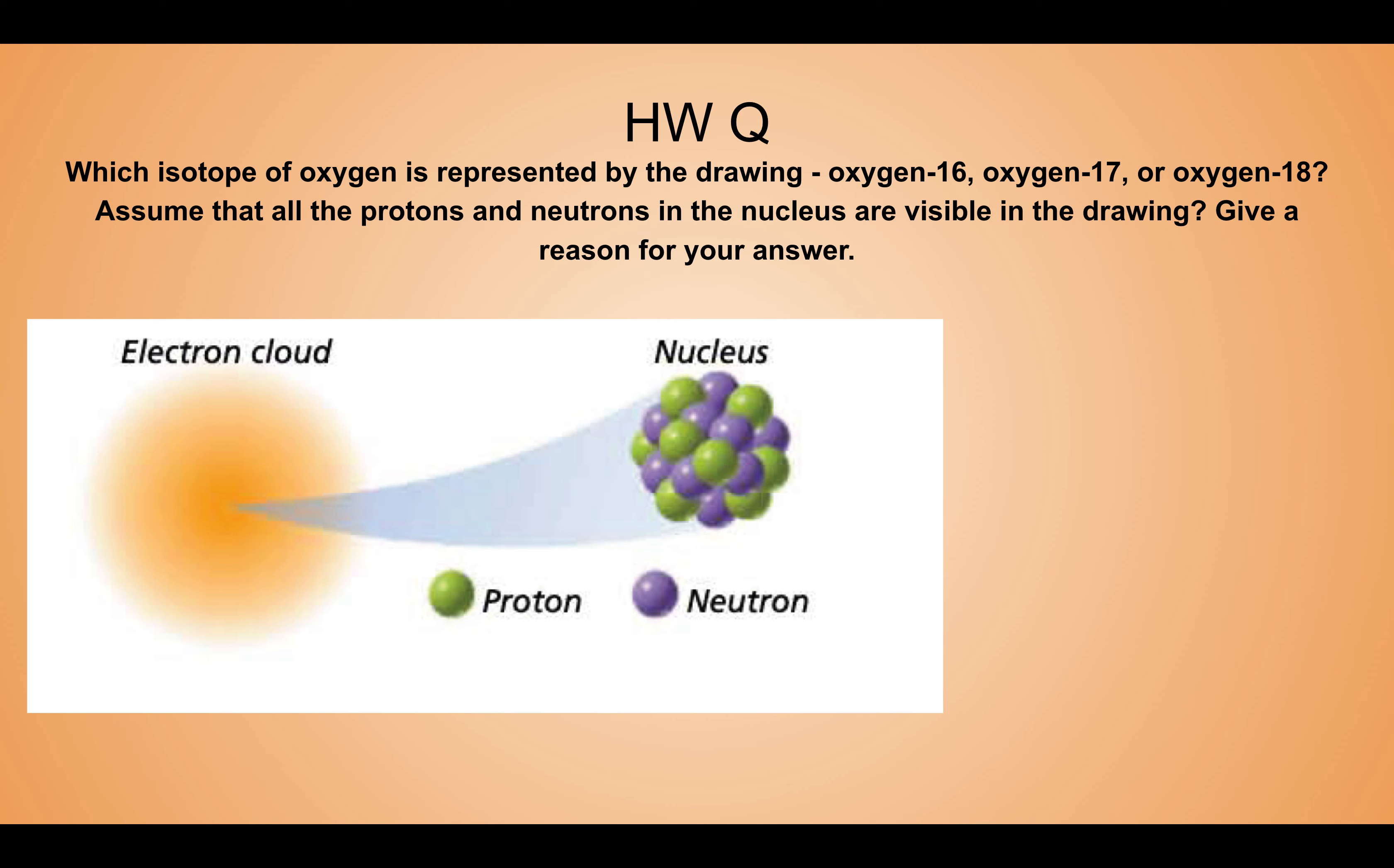What you need to know here is to identify which isotope this is. It says assume that all the protons and neutrons are visible in this drawing. Go ahead and count for me - count the number of protons, which are the green ones, and count the number of neutrons. Our mass number, to figure out which isotope this is, we're going to add these two together - add our protons and neutrons together. What do you get? Yeah, you get 17. So our isotope here is oxygen-17.